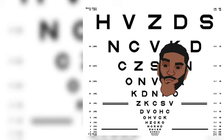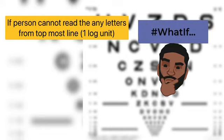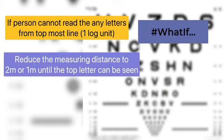Do you know what you need to do if someone is not able to see any letter from the topmost line? In that case, you have to reduce the viewing distance to half. From 4m, you bring down the chart directly to 2m.